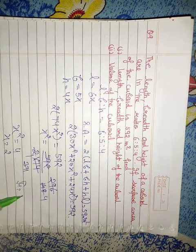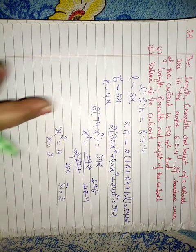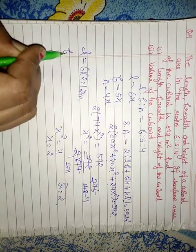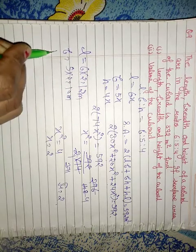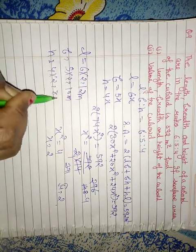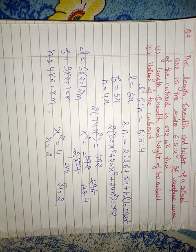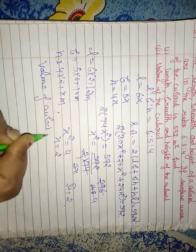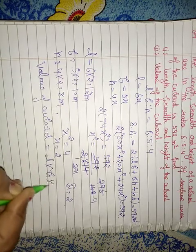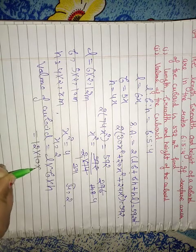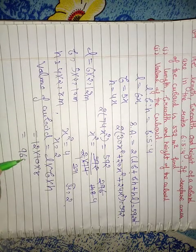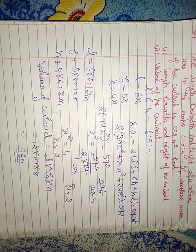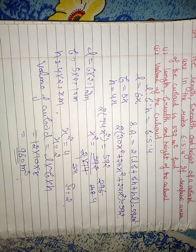If we take the square root of four, we get x equals two. So length equals six into two equals twelve meter, breadth equals five into two equals ten meter, and height equals four into two equals eight meter. Volume of cuboid equals length into breadth into height equals twelve into ten into eight equals nine hundred sixty cubic meter.